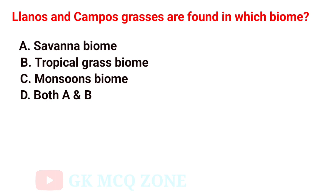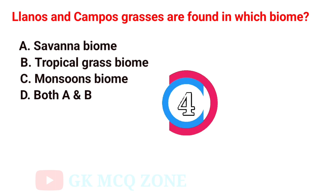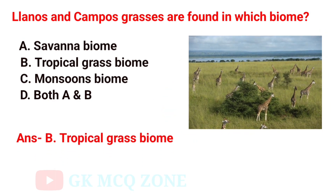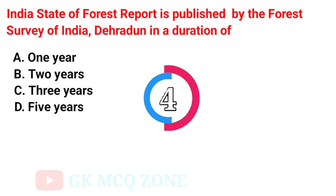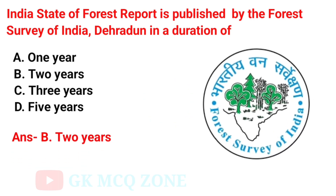Llanos and campos grasses are found in which biome? The correct answer is Option B: Tropical Grass Biome. The India State of Forest Report is published by the Forest Survey of India, Dehradun, in a duration of — the correct answer is Option B: Two Years.